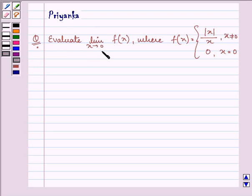Evaluate the limit as x approaches 0 of f(x), where f(x) equals |x|/x when x ≠ 0, and 0 when x = 0.